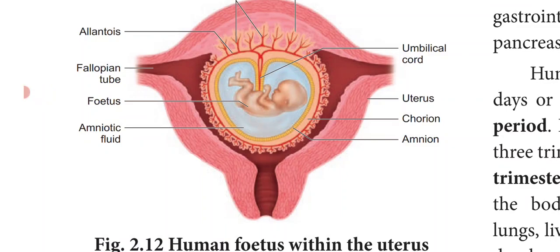By the end of the second trimester, the face is well formed with features. Eyelids and eyelashes develop, eye blink occurs, the body is covered with fine hair, muscle tissue develops, and bones become harder.